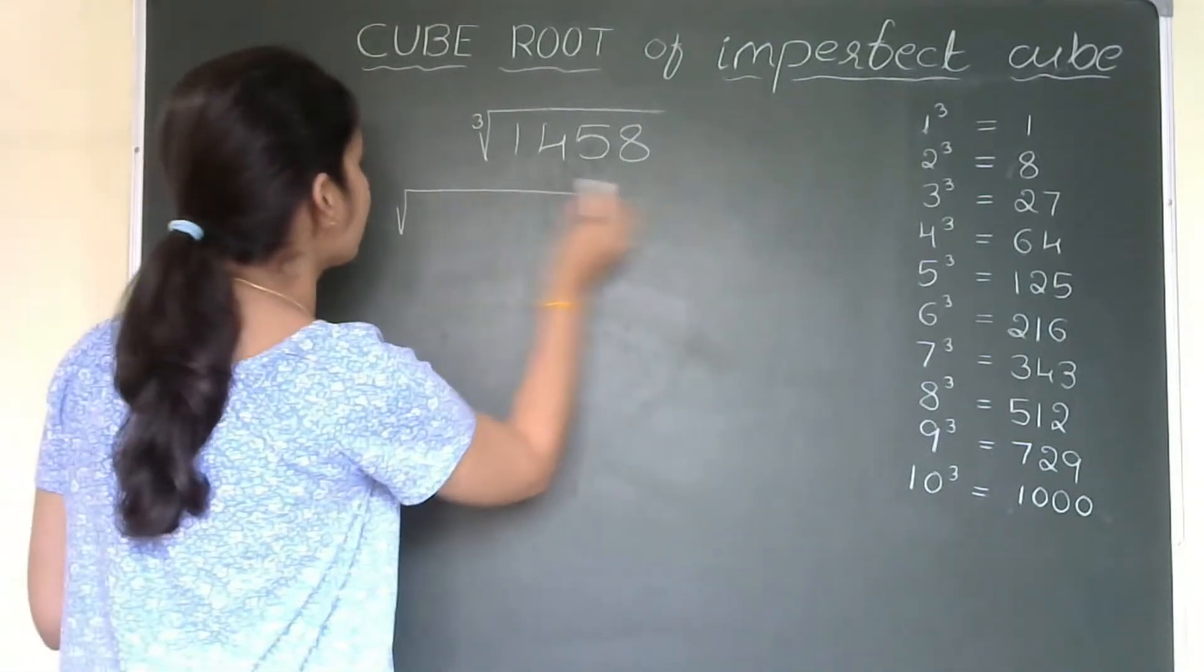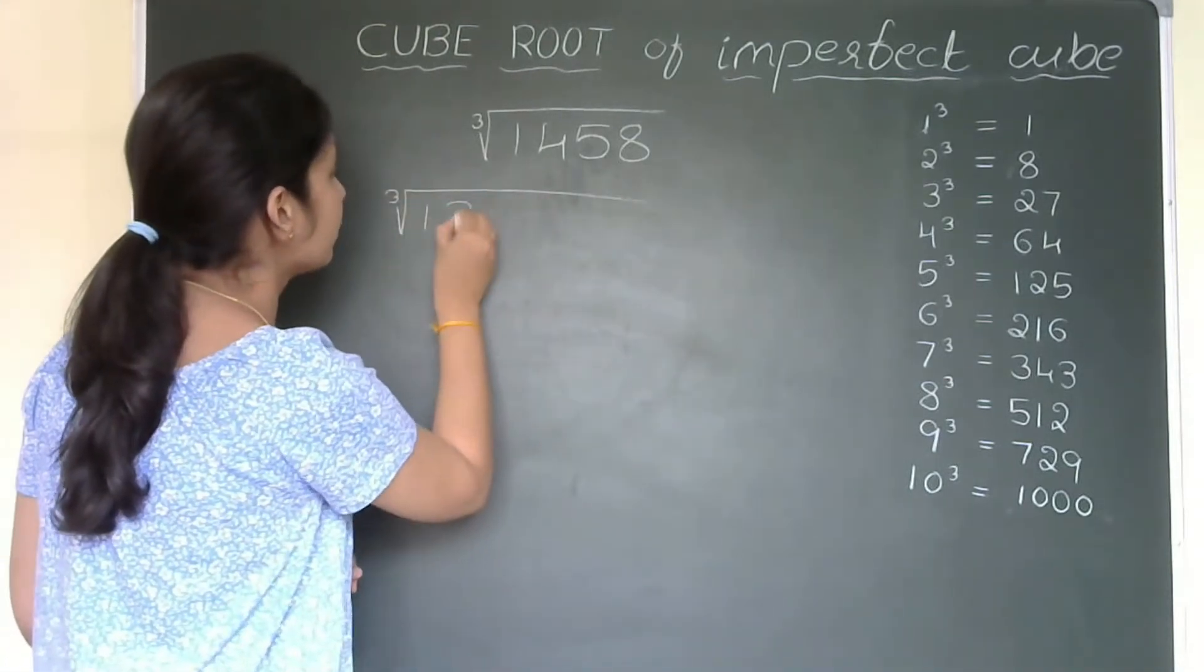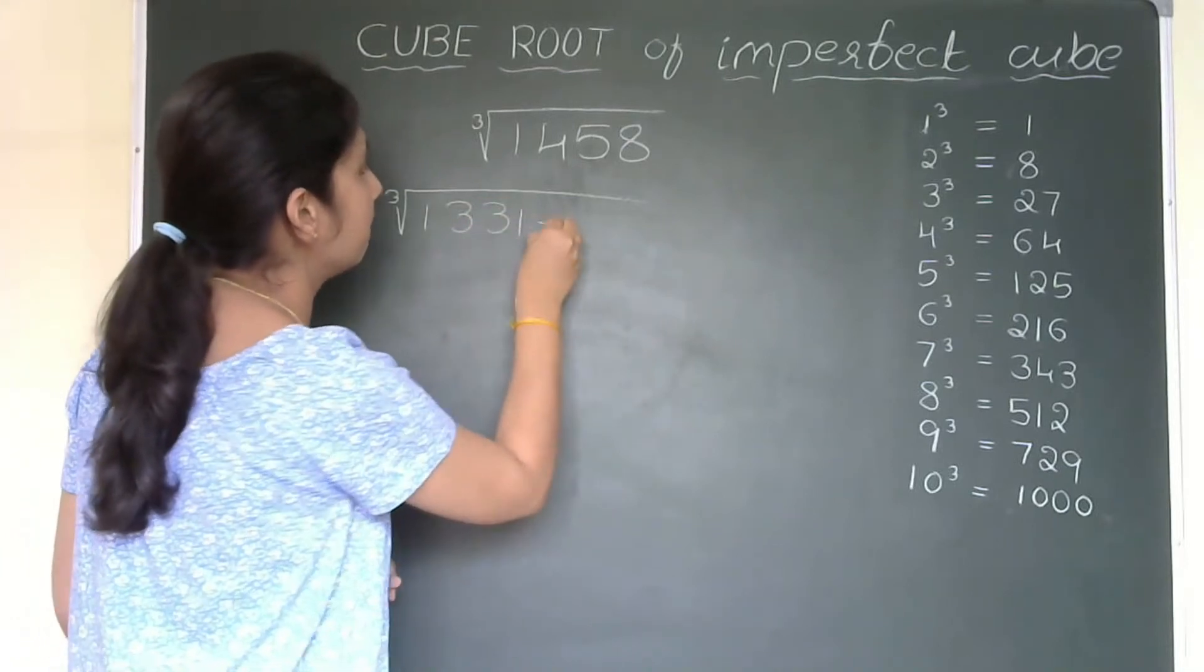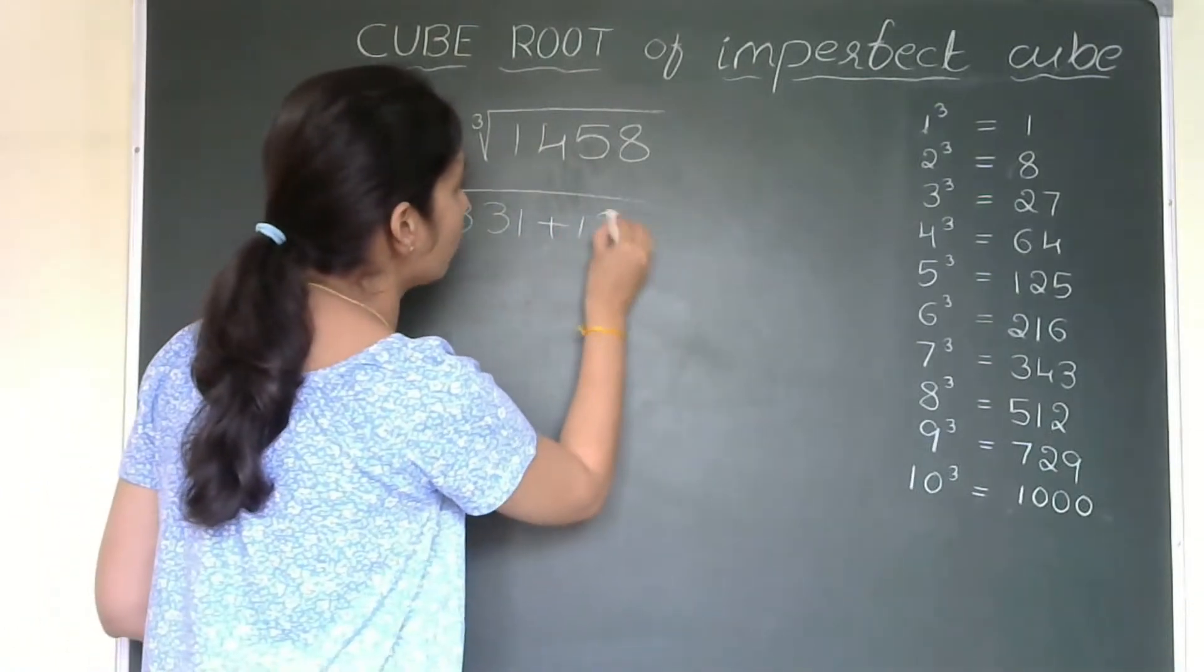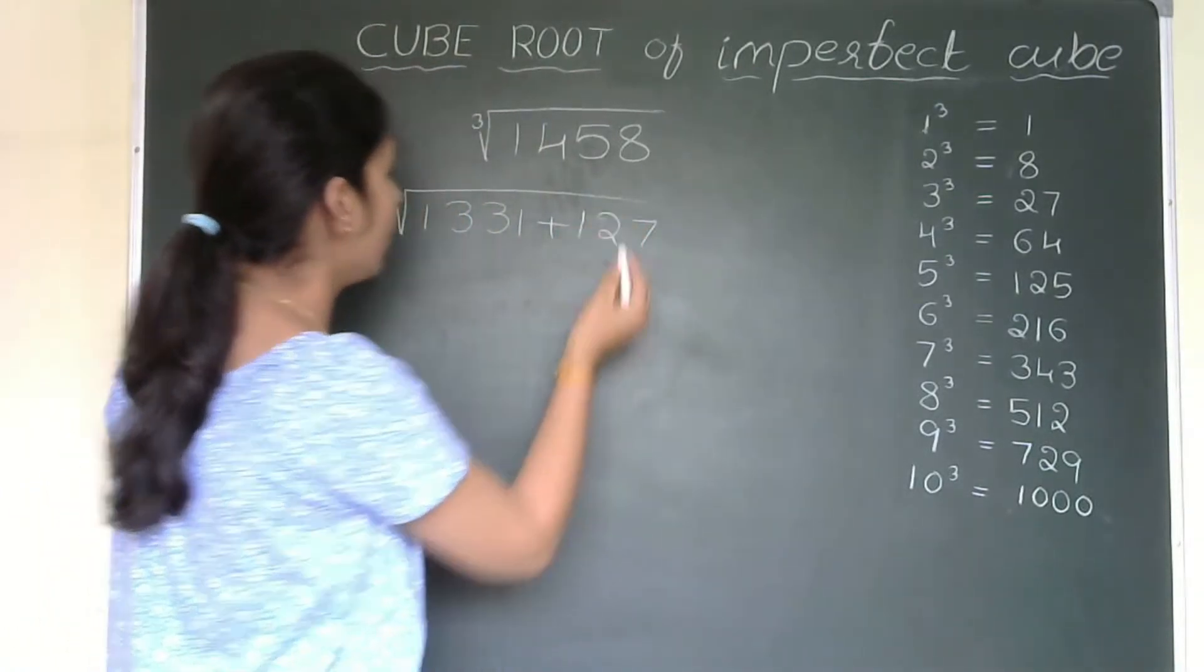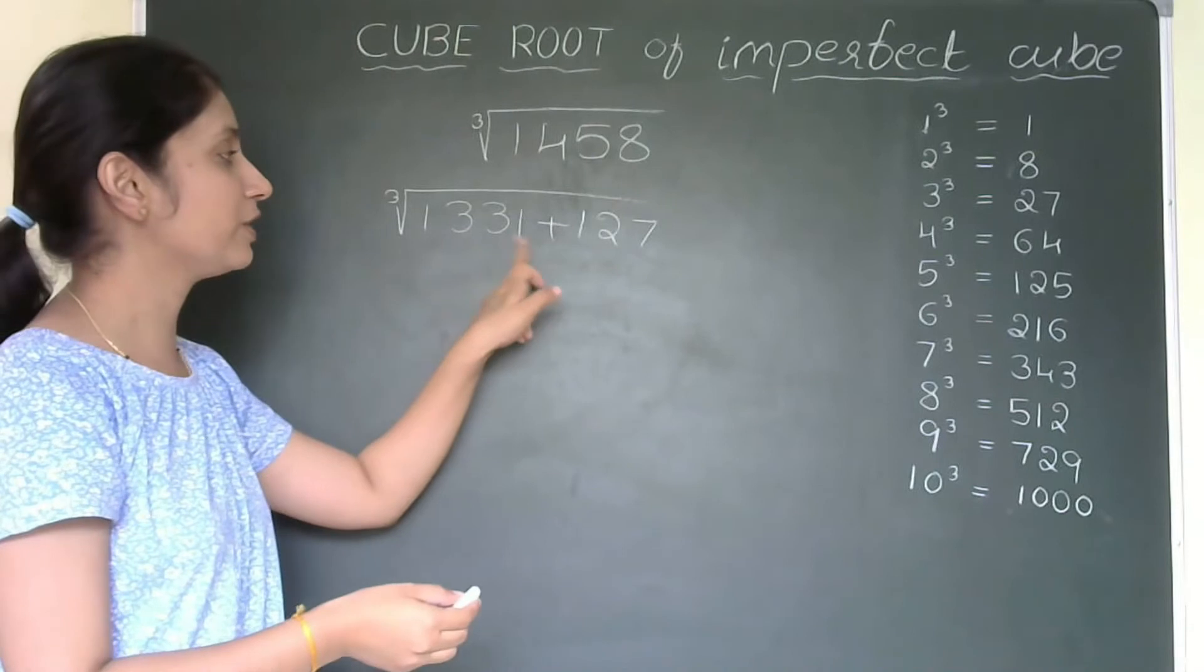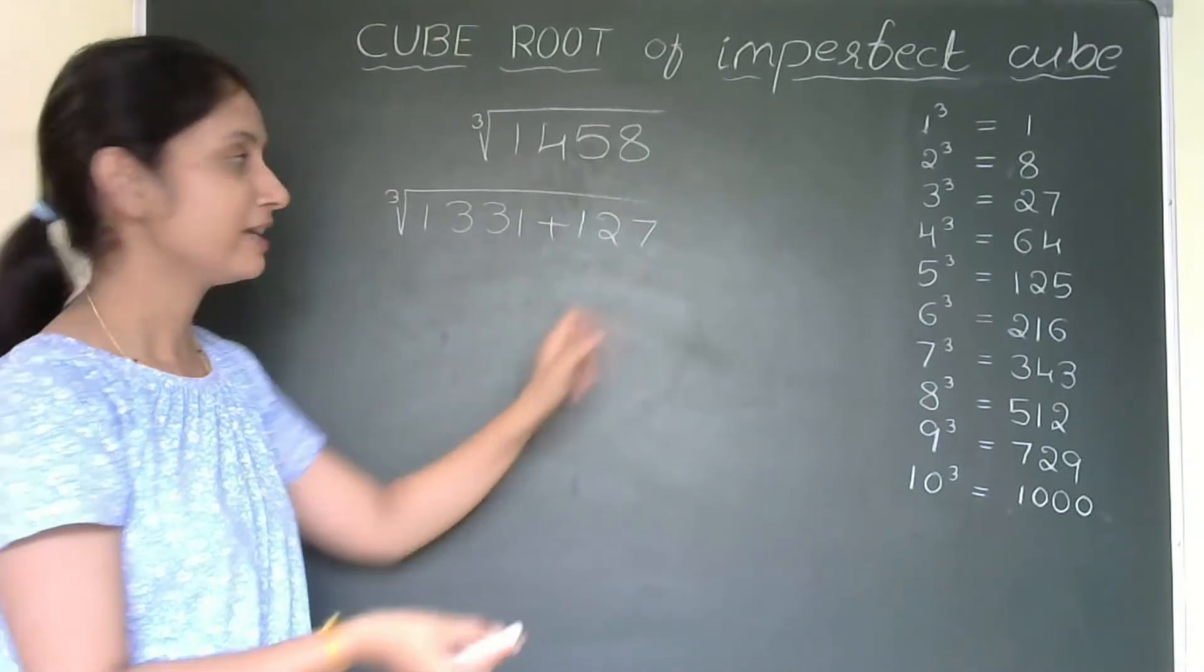So, how I will write this? It is 1331 plus 100 extra and 27 extra, 127. So, I can write as 1331 plus 127.